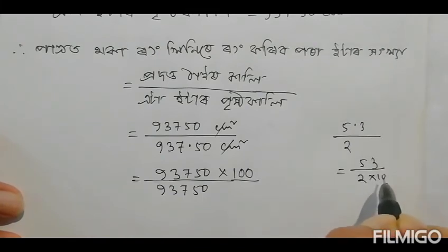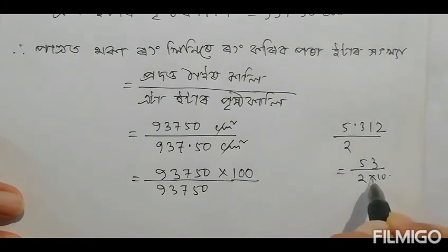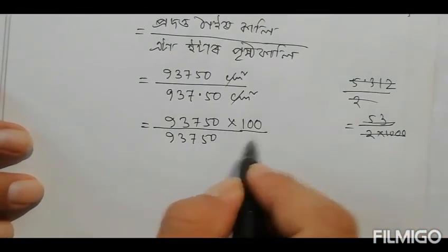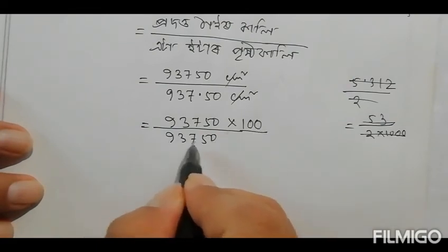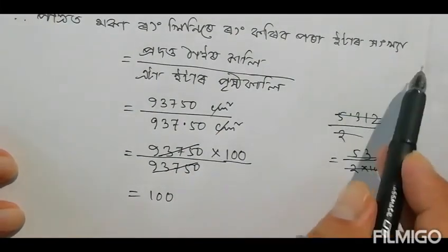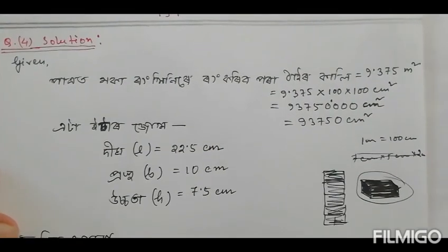So we have 2 × 10, giving values of 1, 2, 3. Using the technique, we add these together to get 750. The final answer is 937.50 cm². So the answer to question 4 is confirmed. Thank you for watching my channel.